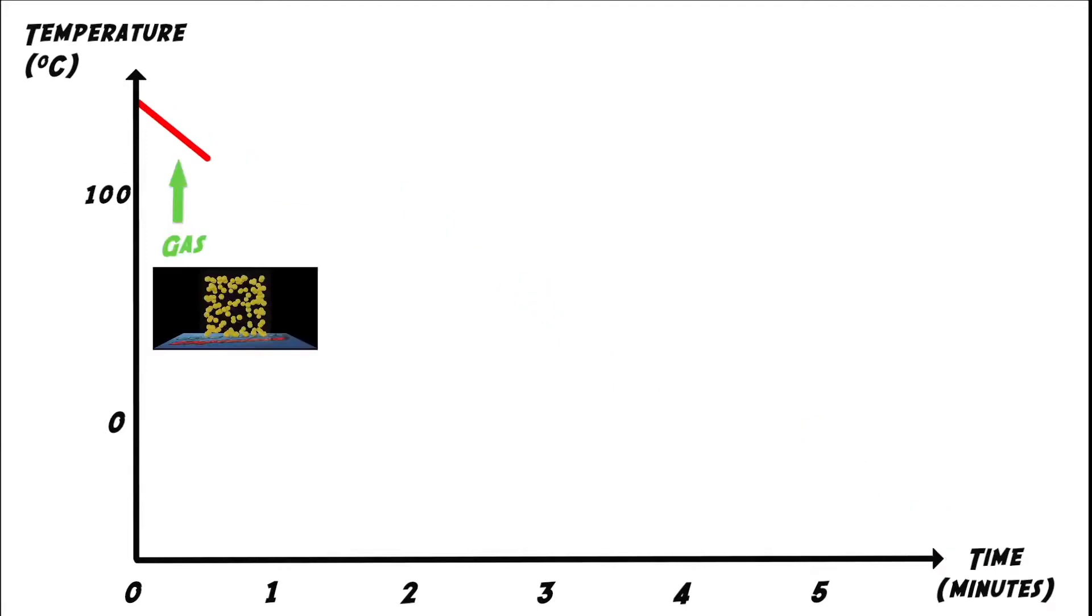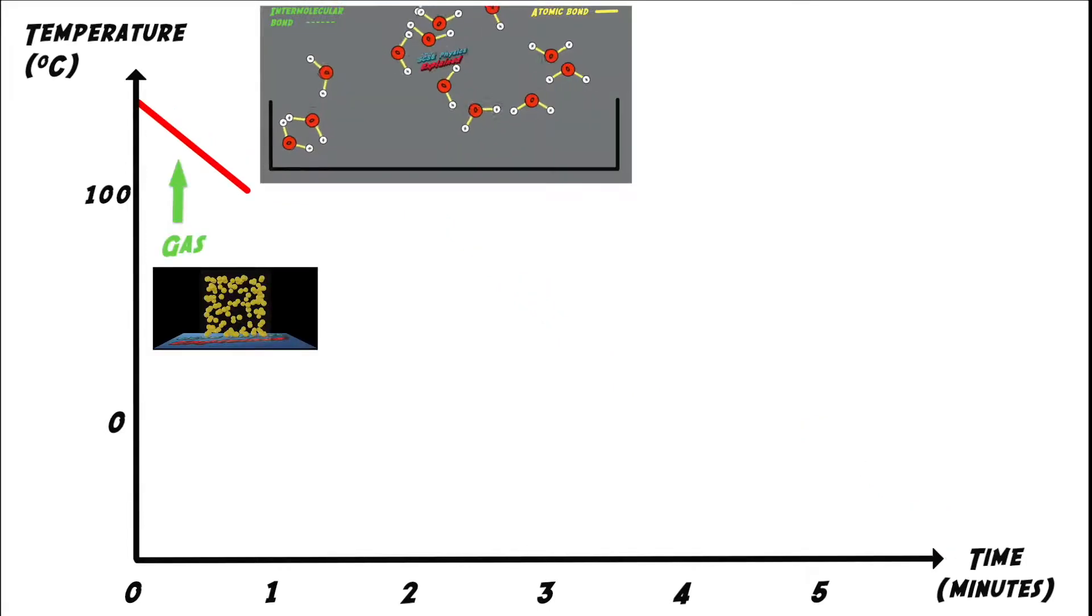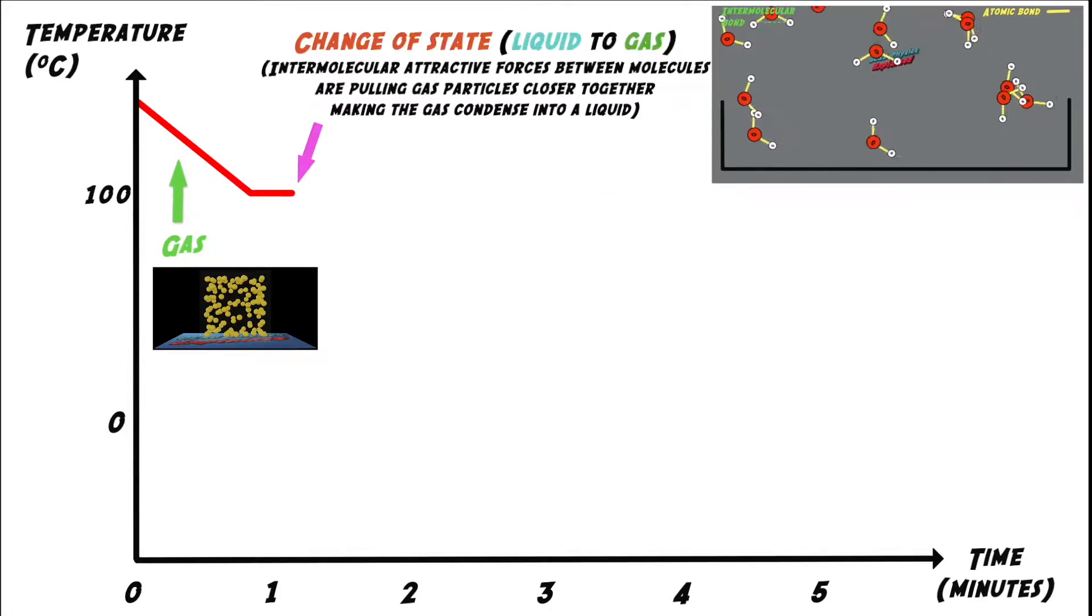As the graph cools to its boiling point, the molecules lose energy. They no longer have enough energy to overcome intermolecular attractive forces, so they get pulled back together and intermolecular bonds start to reform between the molecules, making the gas condense into a liquid.